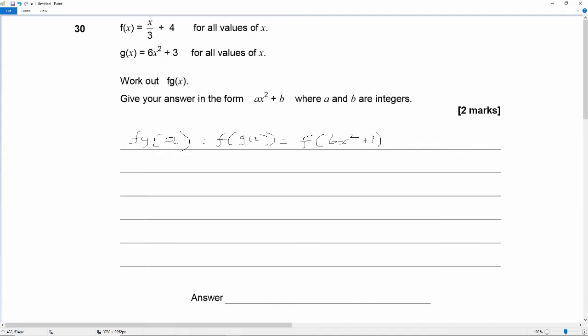So wherever we see x in f of x we substitute in 6x squared plus 3. So fg of x is equal to, instead of x over 3, it's 6x squared plus 3 over 3 plus 4.